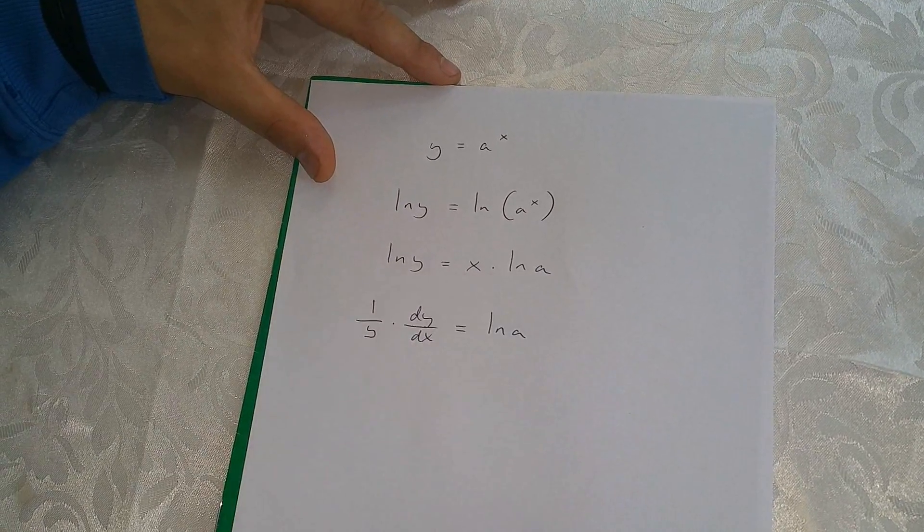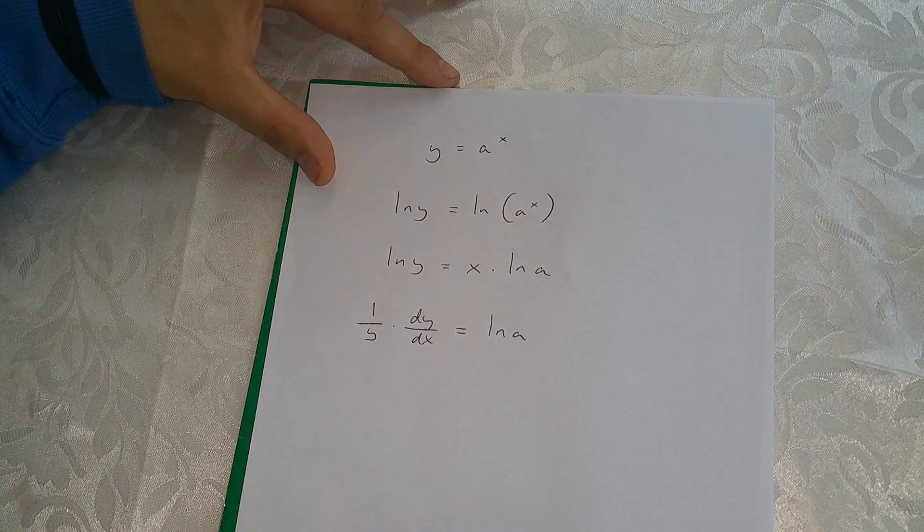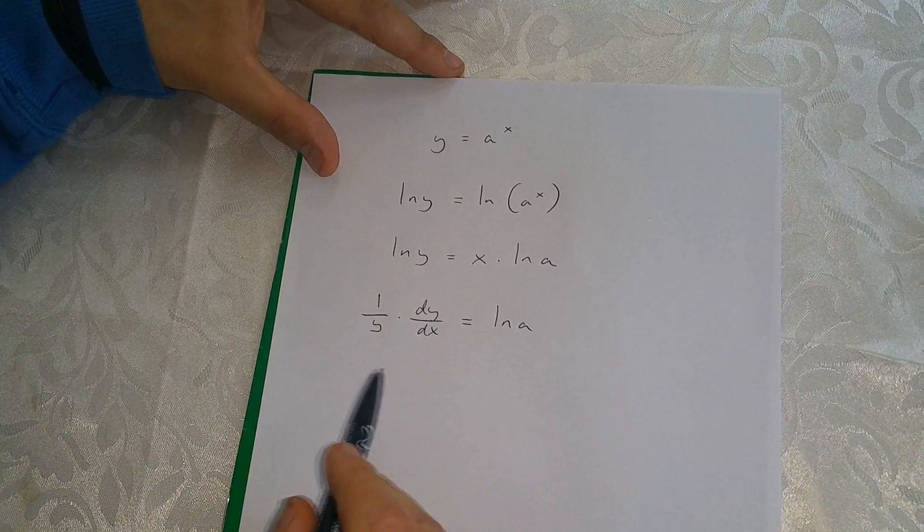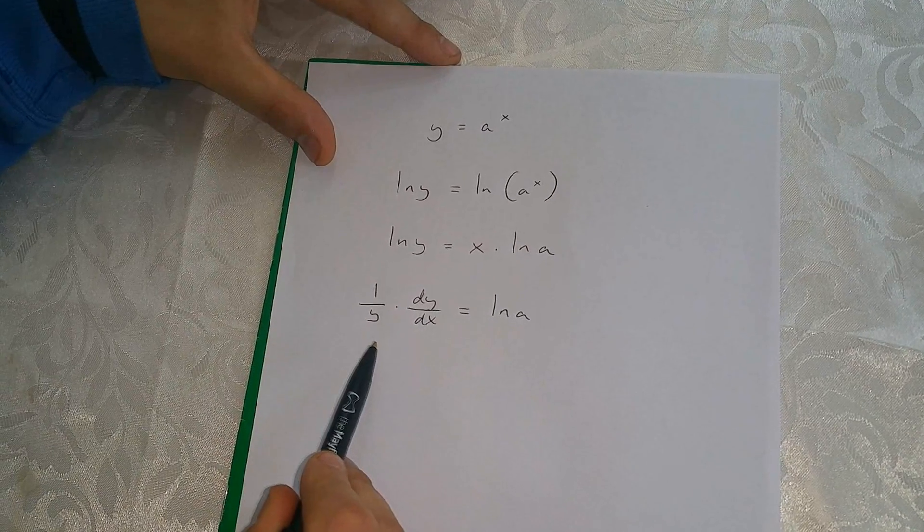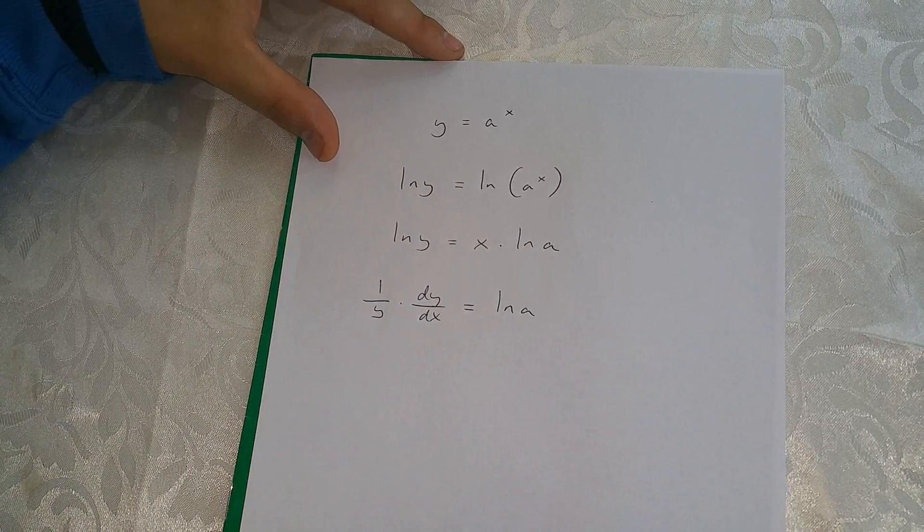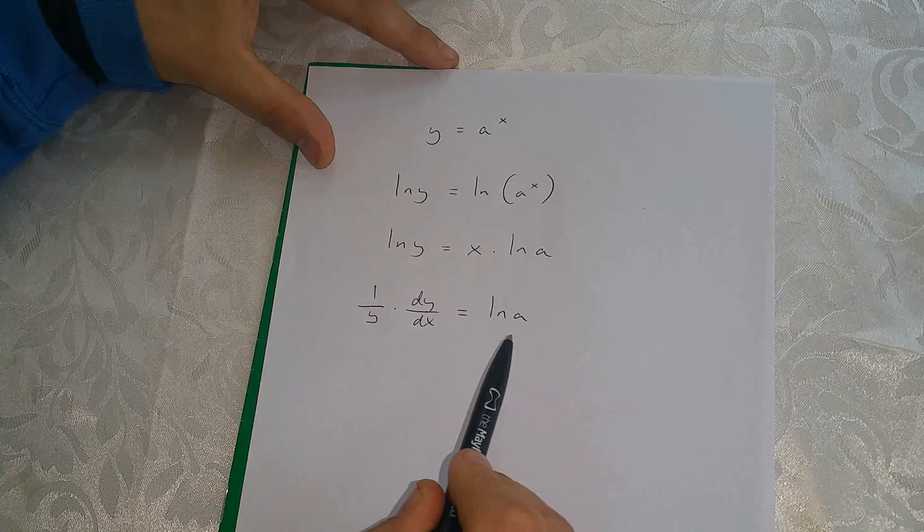And ln a can be considered to be a number. So we've got 1 over y times dy over dx equals ln a.